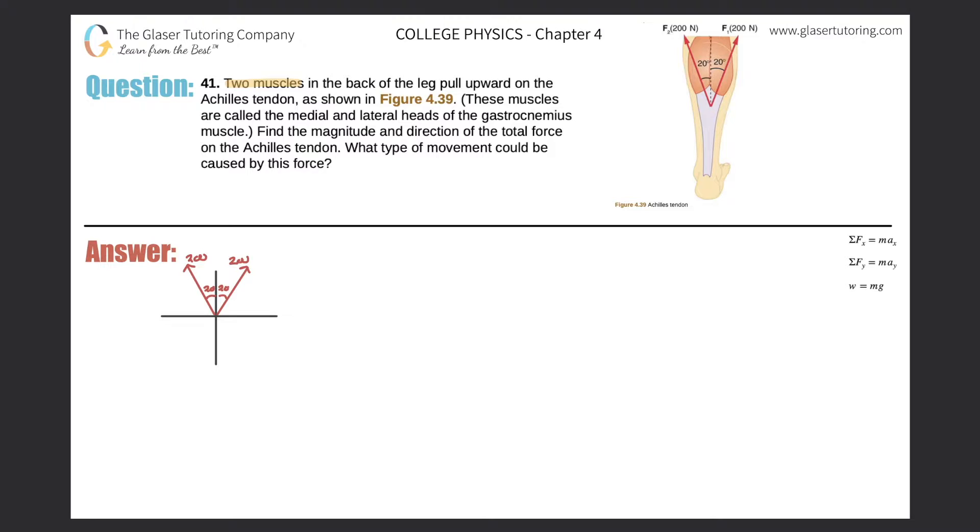Number 41. Two muscles in the back of the leg pull upward on the Achilles tendon, as shown in figure 4.39. These muscles are called the medial and lateral heads of the gastrocnemius muscle, which lies superficially to the soleus muscle and is biarticular, whereas the soleus muscle is uniarticular. But if you want to learn more about that, check out our question series on the Anatomy and Physiology OpenStacks textbook.